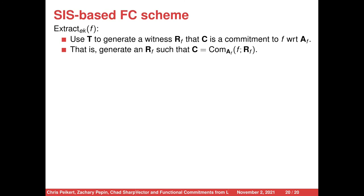The extract function is run by the online authority to generate opening keys. Extract uses the trapdoor T to generate a witness that C is a commitment to f. Since C can be viewed as a superposition of commitments to all functions f in the family, extract gives us a witness that C is a commitment to this particular f with respect to the public matrix A_f, and the opening key is the randomness R_f.